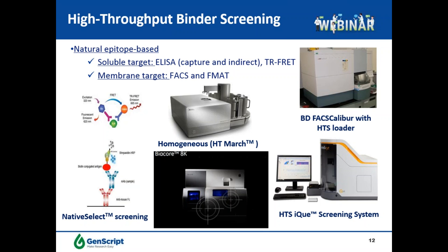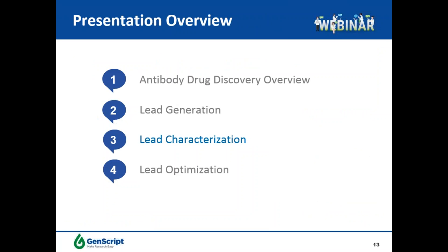We are also equipped with a homogeneous HTM ARCH binding assay system for membrane target binder screening. Next-generation SPR-based ADK is also in place for high-throughput screening and characterization. With these high-throughput screening platforms, we are able to identify numerous hits of binders.